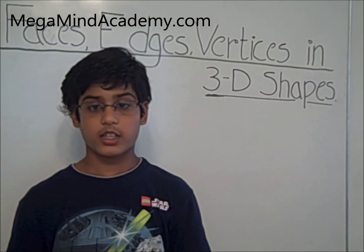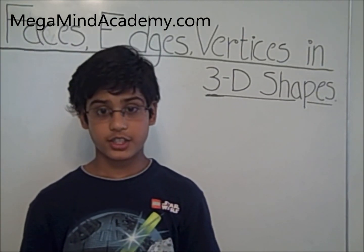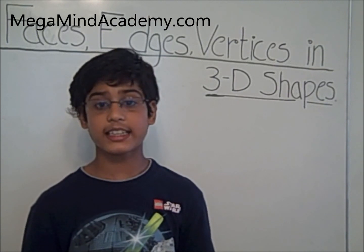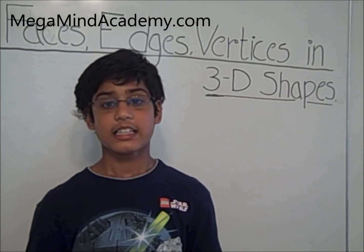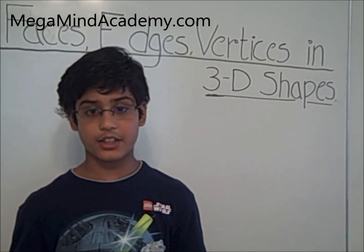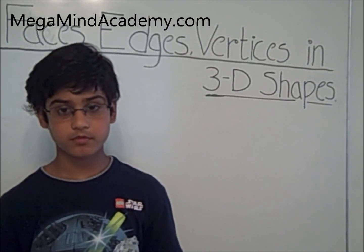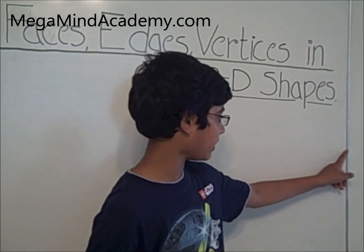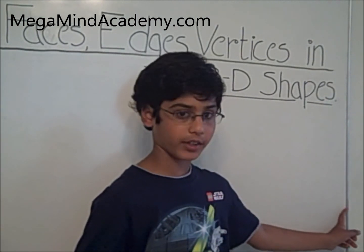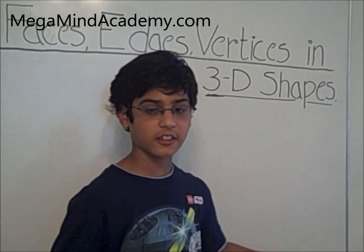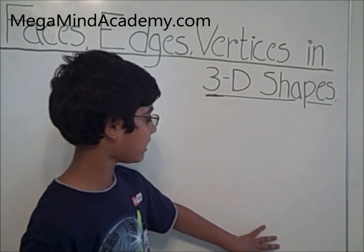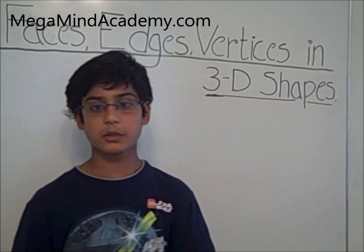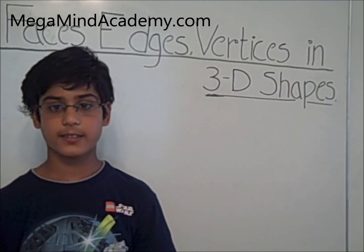The second one is an edge. An edge is a line that connects faces together. This is the edge of the swipe board — it connects the front face and the side face of the board together.